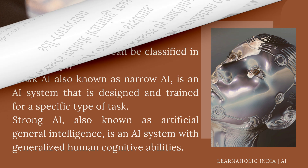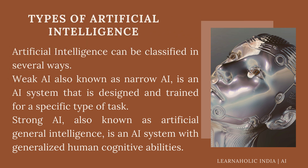Now let's move to the types of artificial intelligence. Artificial intelligence can be classified in several ways. The first classifies AI as either weak artificial intelligence or strong artificial intelligence. Weak AI is a system designed and trained for a specific type of task. Strong artificial intelligence, also known as artificial general intelligence, is an AI system with generalized human cognitive abilities so that when presented with an unfamiliar task, it has enough intelligence to find a solution.